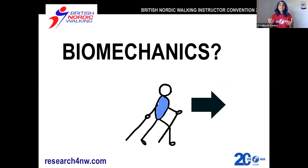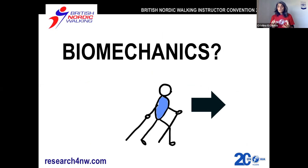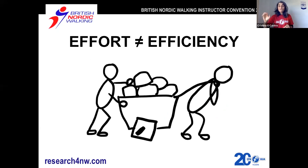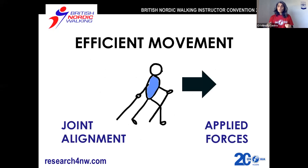Good technique in Nordic walking is based on good biomechanics. But what is biomechanics other than a really fancy word? Biomechanics is a science that applies the laws of physics and mechanics to human performance. It studies the effects of forces in the human body — it's all about efficiency of movement. We're looking to optimize human performance with minimum energy expenditure. It's important to note that effort and efficiency are not the same. These two guys in the slide are making a tremendous effort; however, the movement they're producing is not efficient at all — because they have square wheels. In Nordic walking, in order to have an efficient movement, we need two things: good joint alignment and appropriate applied forces.